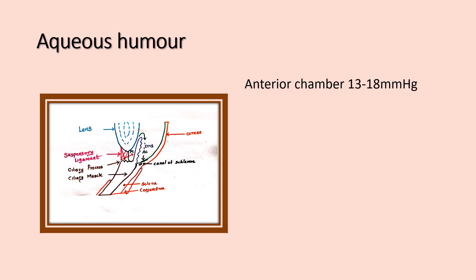Normal intraocular pressure in the anterior chamber is 13 to 18 millimeters of mercury. An increase in intraocular pressure is called glaucoma. In acute glaucoma, the pressure may increase up to 80 millimeters of mercury, producing severe eye pain. Chronic glaucoma compresses the retinal blood vessels and produces blindness.